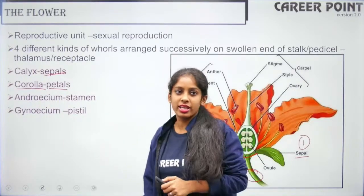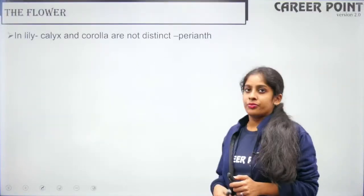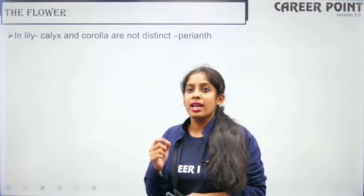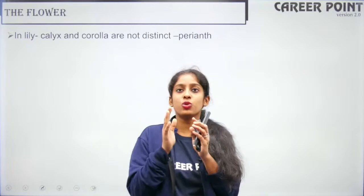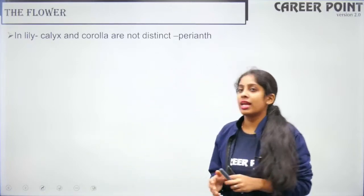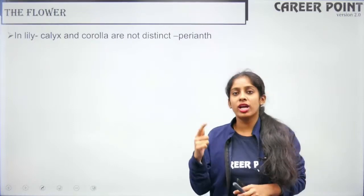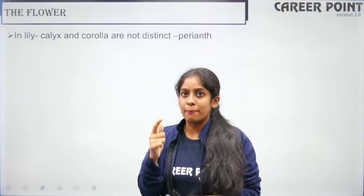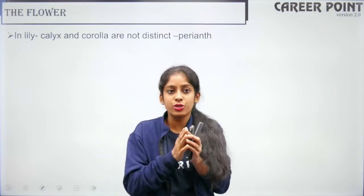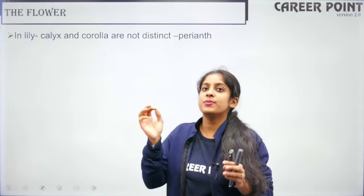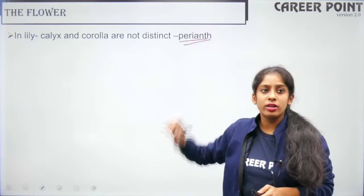In certain flowers, when calyx and corolla are not distinct — when sepals and petals are joined together — they are called tepals. When you cannot distinguish them separately, that condition is called the perianth condition. An example is the lily flower.